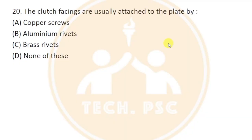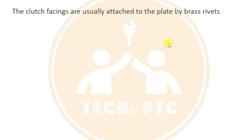The clutch facings are usually attached to the plate by riveting. The clutch disc, clutch plate, and clutch facings — the facings are a friction substance with a coefficient of friction. The facings are attached to the plate by a riveting method using brass rivets, not aluminum rivets. The clutch facings are usually attached to the plate by brass rivets.